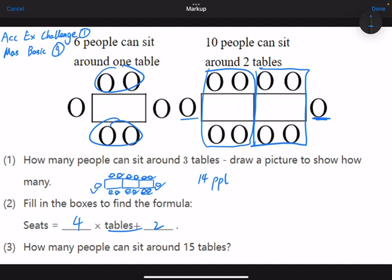Seats equals four times tables plus two, which gives us the answer immediately. So seats equals four times fifteen plus two, which is sixty-two. Sixty-two people can sit around fifteen tables.